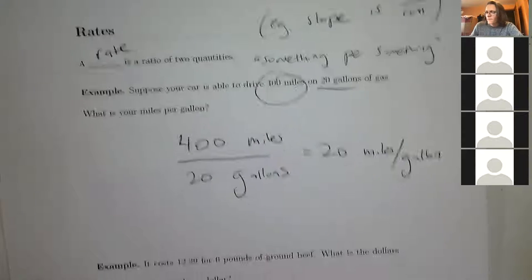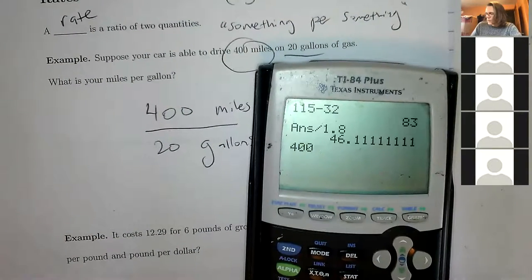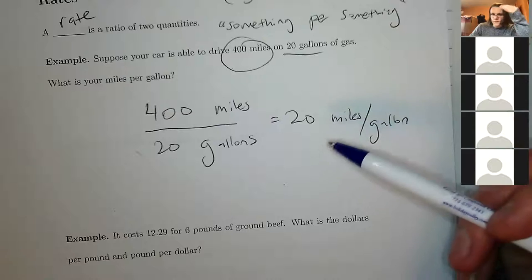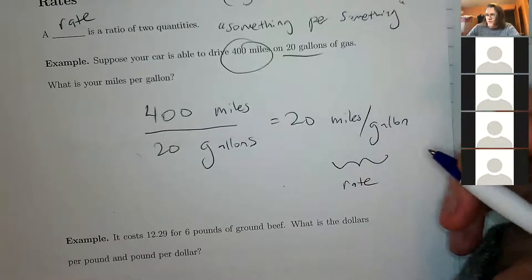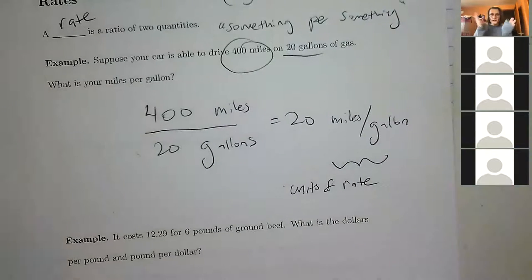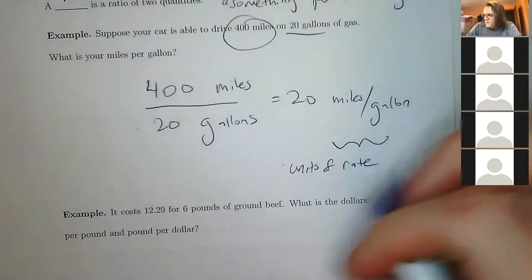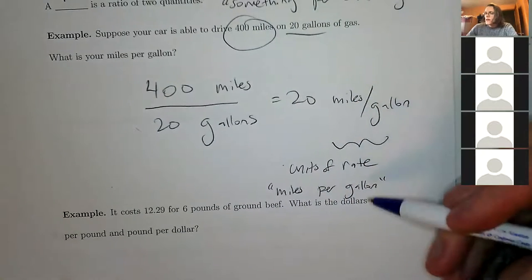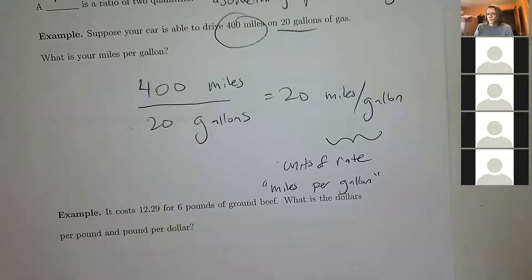When you simplify the fraction, still write the units as a fraction or ratio. So it's 20 miles per gallon — that's your rate. You can write it as 'miles per gallon' or as a fraction 'miles over gallons'; both mean the same thing.